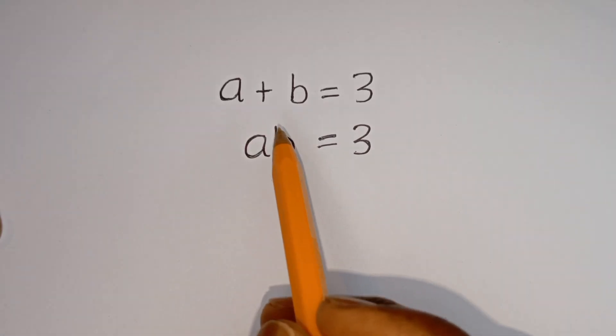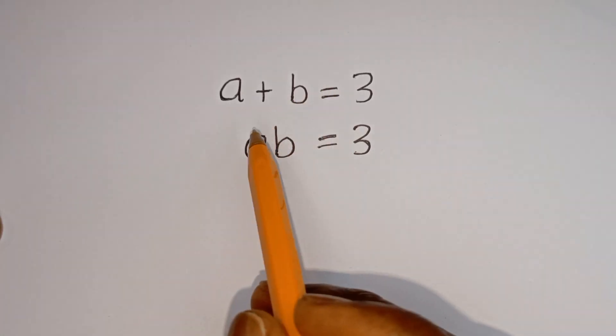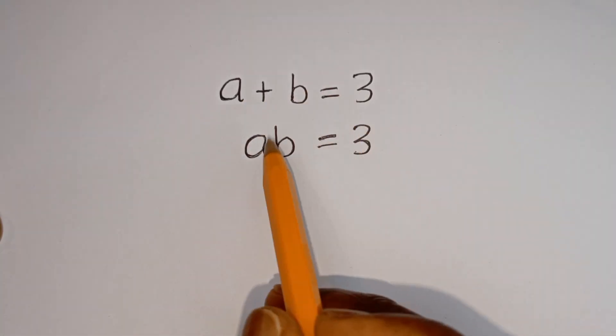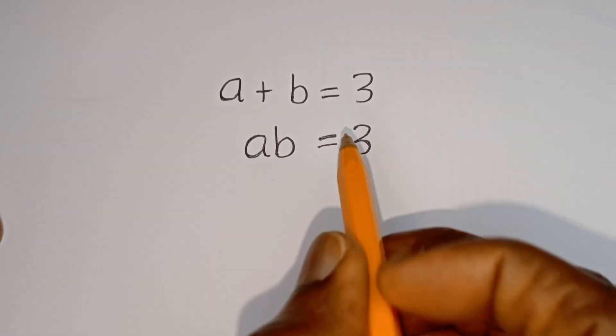Hello. How to solve for A and B in this equation? A plus B is equal to 3. A times B is equal to 3.